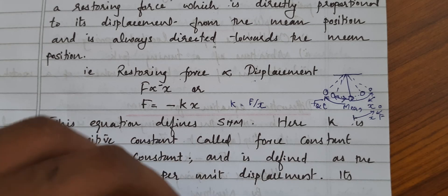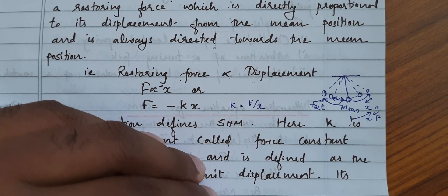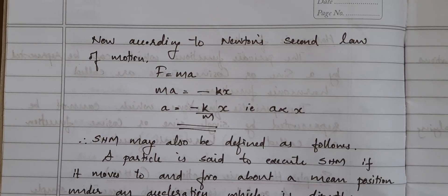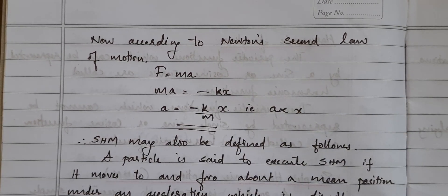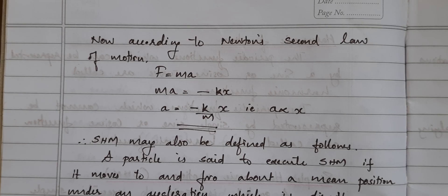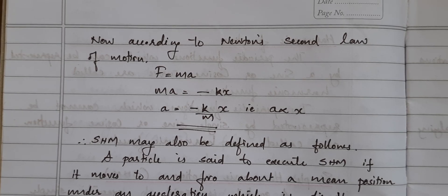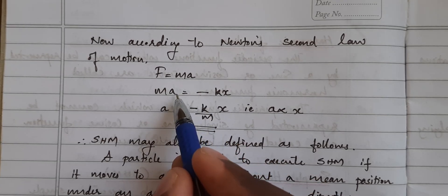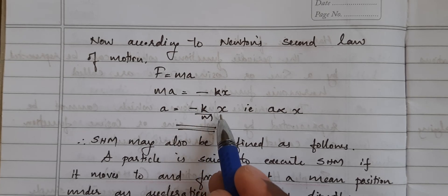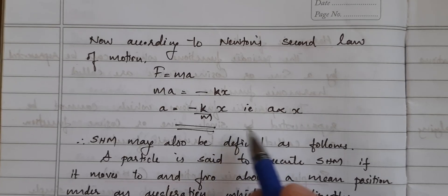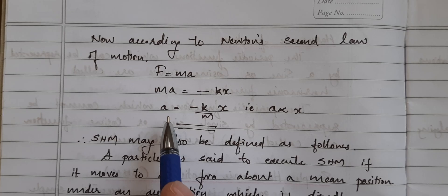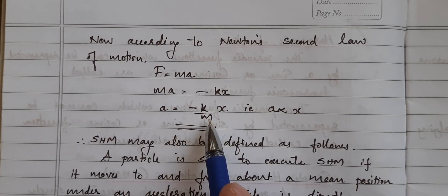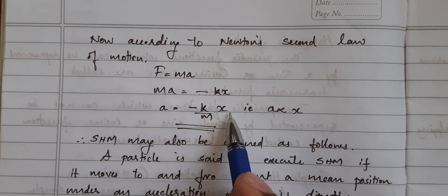Now considering the mathematical aspect: the body has mass m and acceleration a. From Newton's second law, F = ma, and F = −kx, so ma = −kx. Therefore, a = −(k/m)x. Since k and m are constants, acceleration a is proportional to displacement x — confirming the proportional relationship between acceleration and displacement.